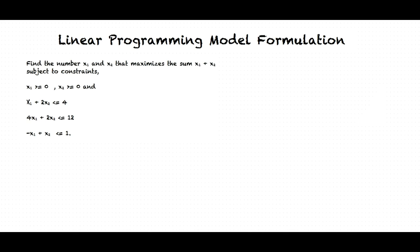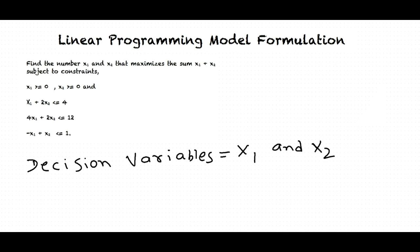What is a decision variable? A decision variable is a quantity that the decision maker controls. We want to find out two numbers x1 and x2, so x1 and x2 are called decision variables. What is an objective function? The function to be maximized or minimized is called the objective function. Here we have to maximize the sum x1 + x2, so that is our objective function.